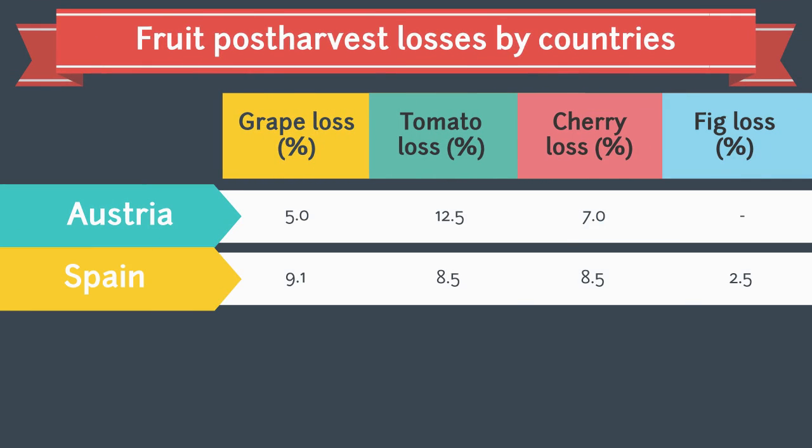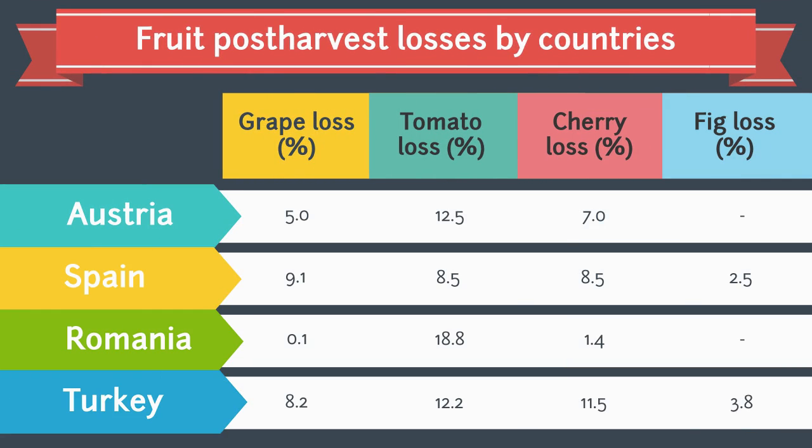One of the most striking rates in the comparison of post-harvest losses of four countries is that the post-harvest loss of grapes in Romania is only 0.1%. The main reason for this is the fact that 85% of the grapes produced in Romania are used in wine and fruit juice production. Tomato is a very sensitive fruit and it has the most post-harvest losses in all four countries. Although Turkey is one of the largest cherry producers in the world, the lack of cold storage, the low level of education of the employees, and the failure of farmers to harvest in time leads to a high percentage of losses.